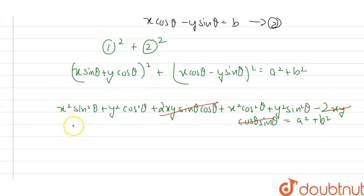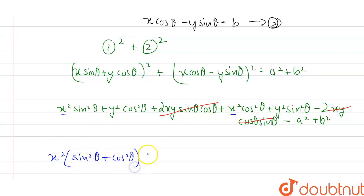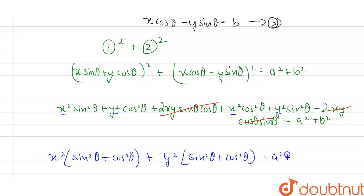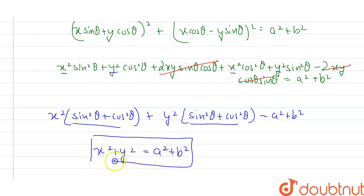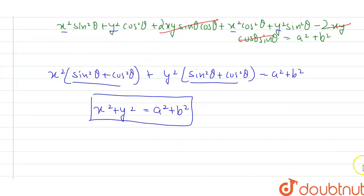We are left with x²(sin²θ + cos²θ) + y²(sin²θ + cos²θ) = a² + b². Since sin²θ + cos²θ = 1, this simplifies to x² + y² = a² + b². This is the equation of the director circle of the ellipse x²/a² + y²/b² = 1.